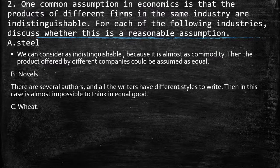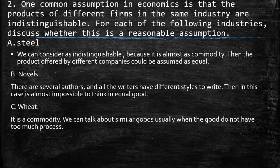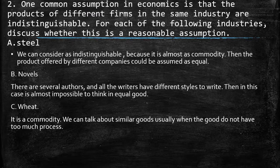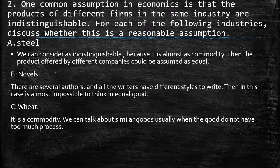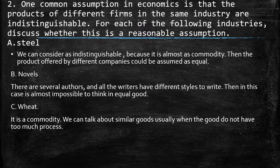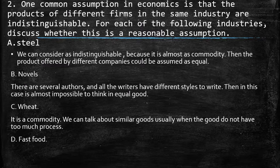Seaweed. Again, this is like a commodity. We can think about similar goods usually when the good doesn't have too many processes. So we can consider seaweed as indistinguishable. And the last one is fast food.